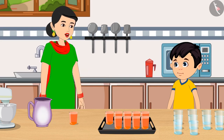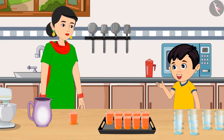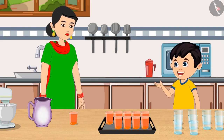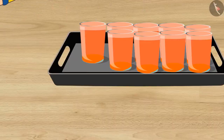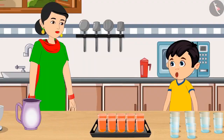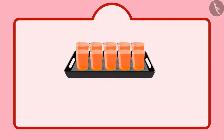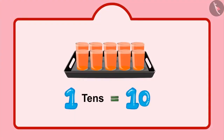So this means, Chotu, that right now we have 9 units. Yes, Mummy, I remember. Now if we put one more glass in this plate, it will be a group of 10 glasses. And we call it as one 10.